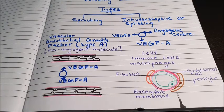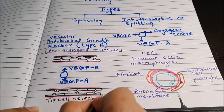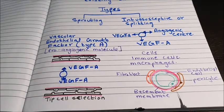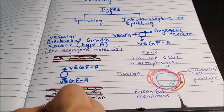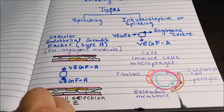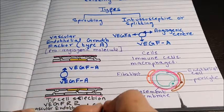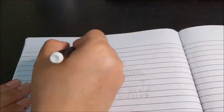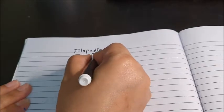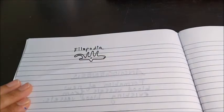In sprouting angiogenesis there are always more capillaries — for example, two capillaries — because the sprouts are released from the capillaries, move towards the angiogenic center, and fuse with each other. This all happens through tip cell selection. Endothelial cells have the receptor for VEGF-A; this receptor is called vascular endothelial growth factor receptor 2, also known as VEGFR2. This VEGF-A and VEGFR2 interaction makes a particular cell the tip cell.